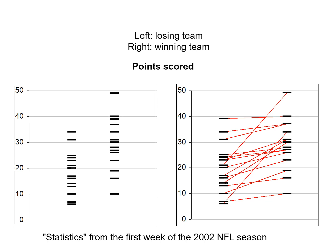We can also see other things from this figure. For example, this game here is like 7 to 10 — what an incredibly boring game. And these steepest slopes are the biggest blowouts: this one is 21 to 49, and this one looks like 6 or 7 to 33 or 34 — a very uneven game. So by adding this information we've identified some interesting games.